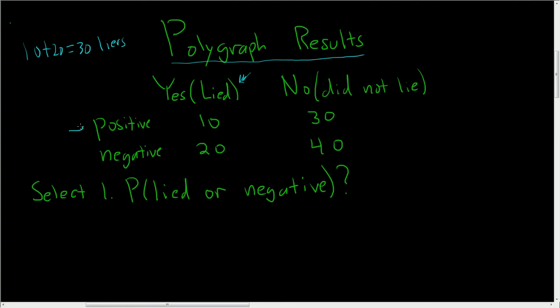What does positive mean? Positive means that the test is saying that you're a liar. So it doesn't mean you're a liar. It just means that the polygraph is accusing you of being a liar. And negative means that the test says that you're not a liar.